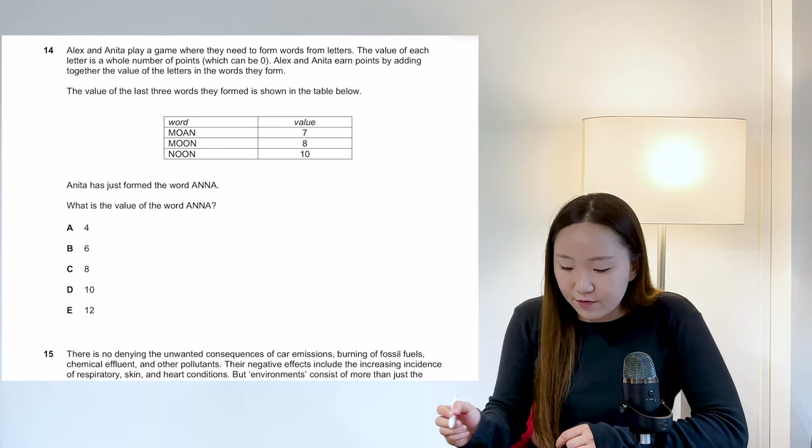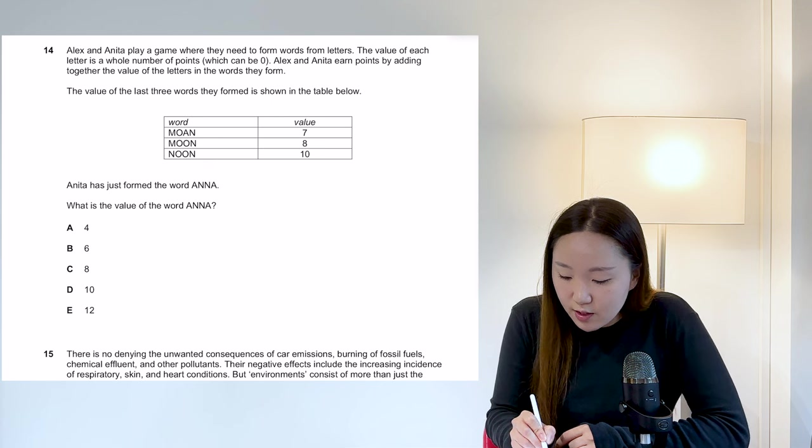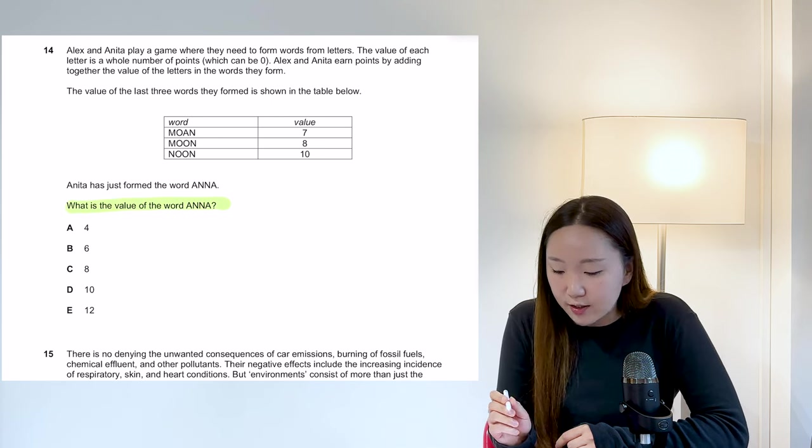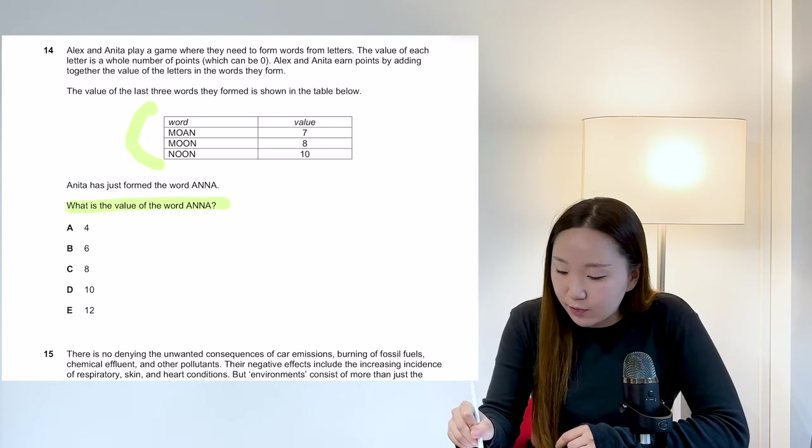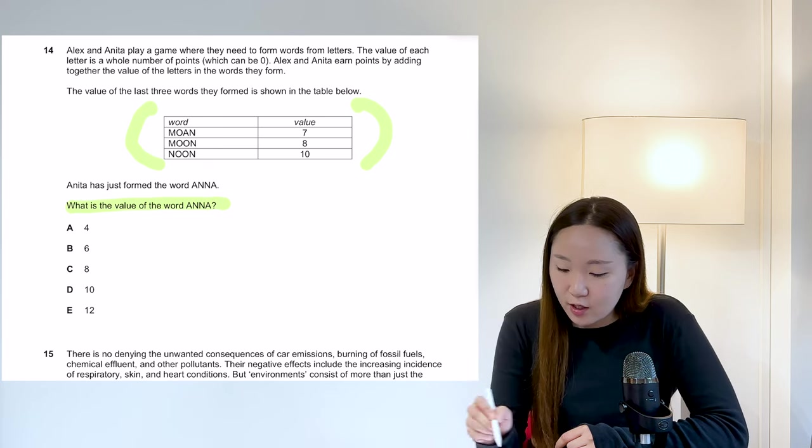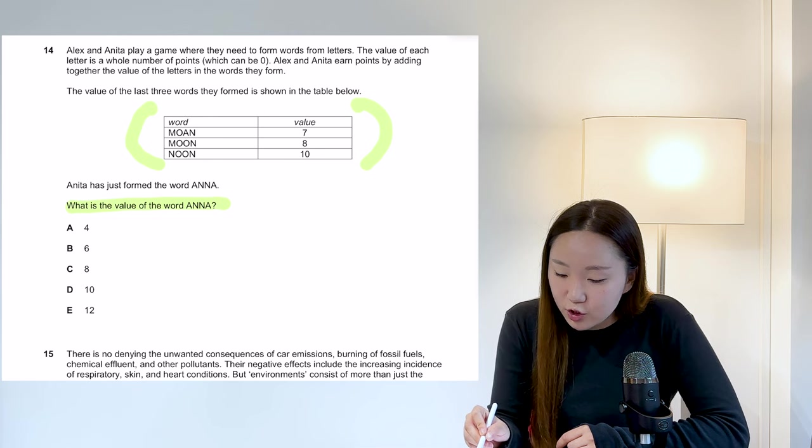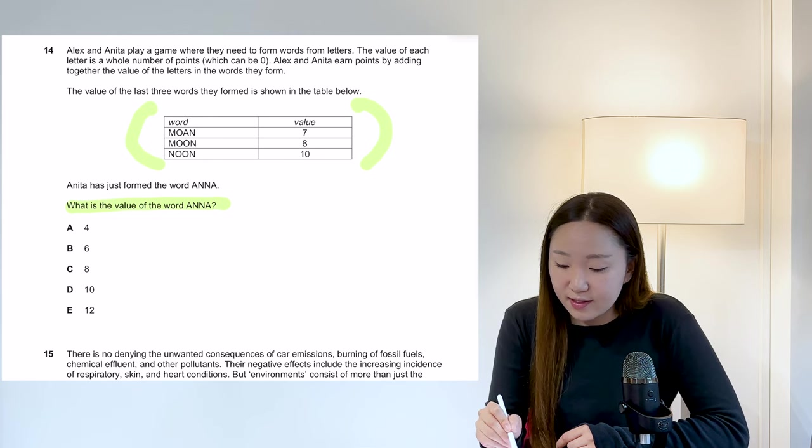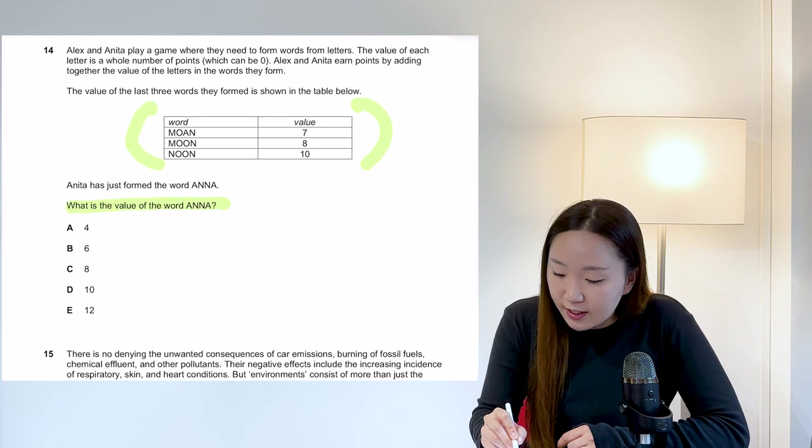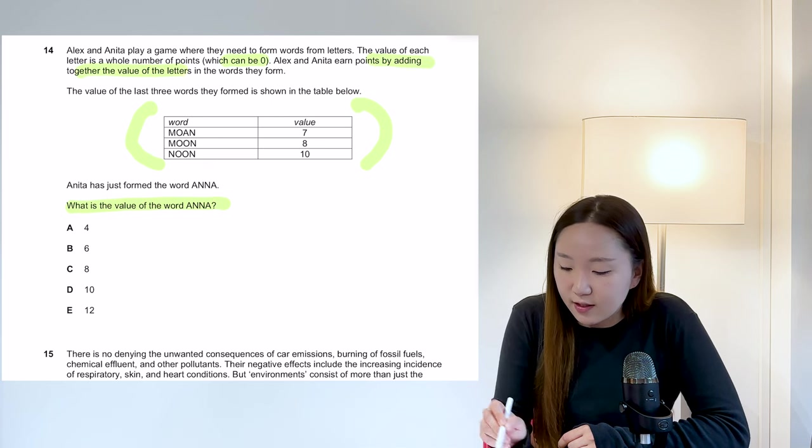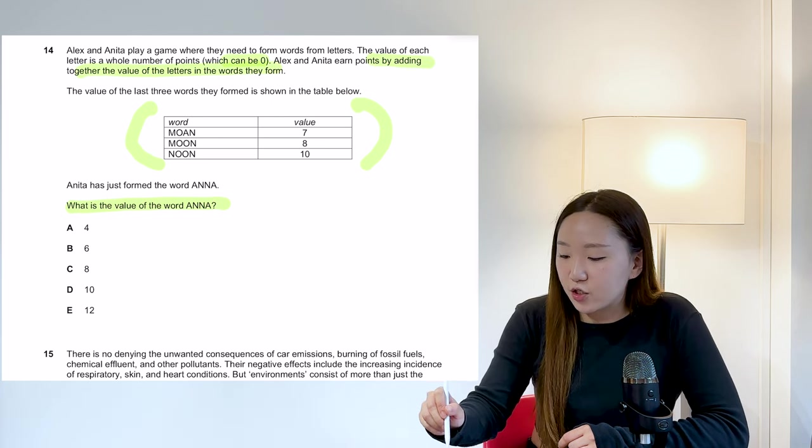Okay, so getting repetitive here, but again, read the question first. So what is the value of the word Anna? And we're given a table here. In this case, we're showing that the value of the last three words are formed as such. And it's just to make sure it is by adding, because it looks like it's by adding, but just to make sure it can be zero. And it is by adding, it's by adding the value of the letters shown.